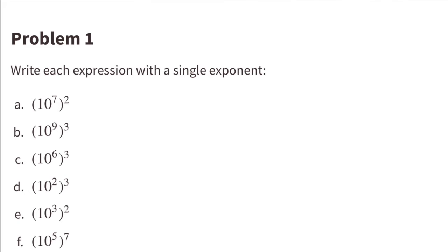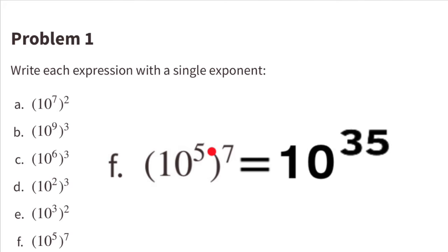Part F: 10 to the 5th power, all to the 7th power. For this one I'd like to show you a different way. You can multiply the inner exponent 5 by the outer exponent 7, and 5 times 7 is 35. So Part F equals 10 to the 35th power.